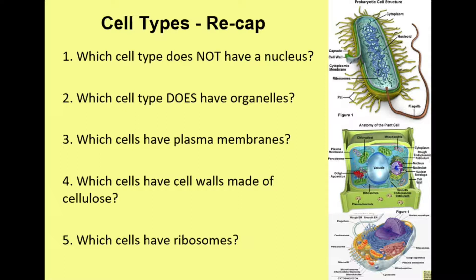Here are five questions to pause and answer. Number one: which cell type does not have a nucleus? Number two: which cell type does have organelles? Number three: which cells have plasma membranes? Number four: which cells have cell walls made of cellulose? Number five: which cells have ribosomes? I'll give you a few minutes to write down the answers, and then we'll go through them together.